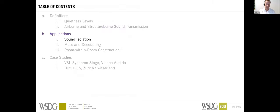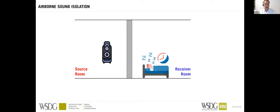The goal of our work is to achieve very good sound isolation — to make a lot of noise in one room so that somebody else does not hear it. We can measure the source room level at 1 kHz using a measurement device. Let's assume we measure 80 dB SPL at 1 kHz in the source room.